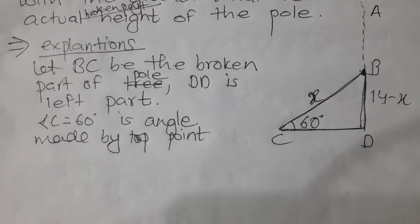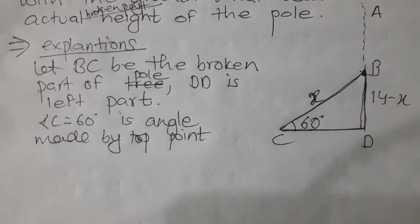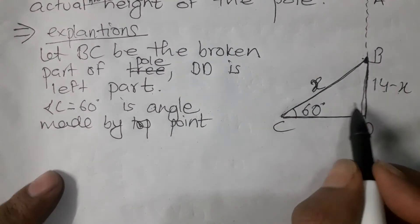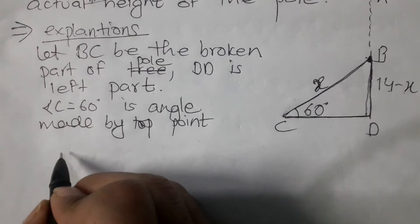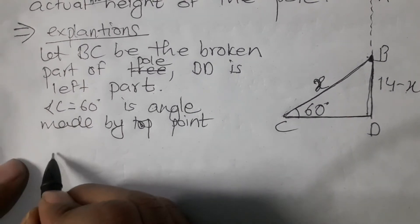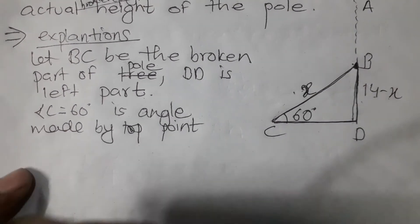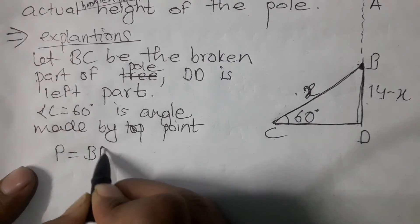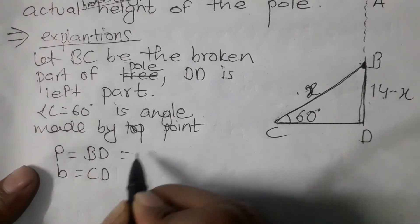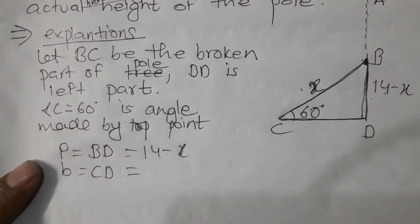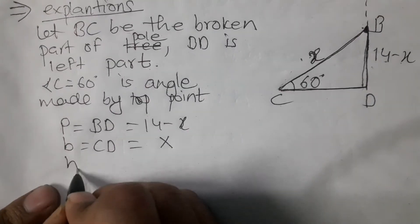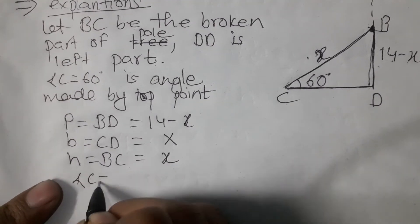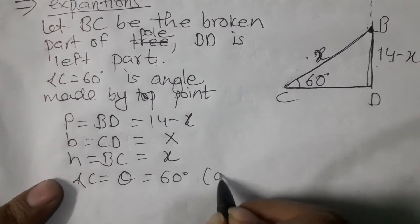After the explanation, we set up the formula. We call the perpendicular part BD and the hypotenuse BC, which equals x. We use sin cos. Angle C equals theta equals 60 degrees, which is the angle of elevation.